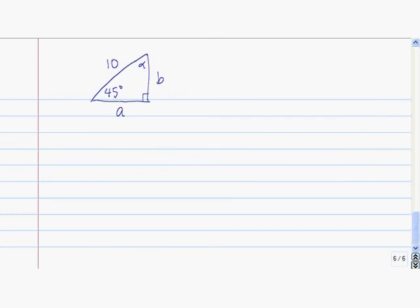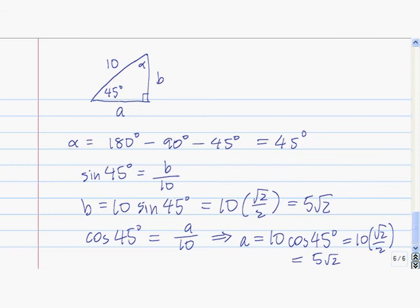Why don't you use trigonometry to solve this triangle? Press pause while you work on it. These are the answers you should have gotten. Alpha is 45 degrees. B is equal to 5 times the square root of 2. And since alpha is also 45 degrees, this is an isosceles triangle, so a is also equal to 5 times the square root of 2, though it's fun to confirm that using trigonometry.